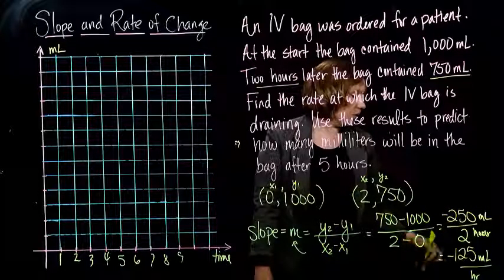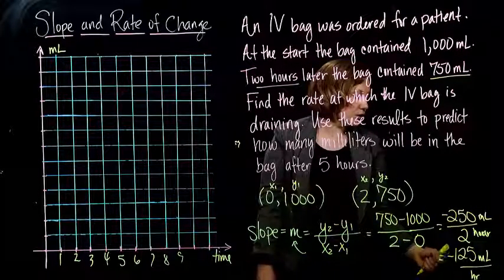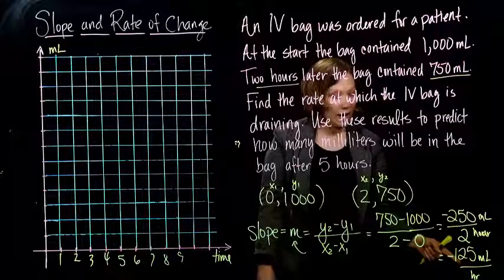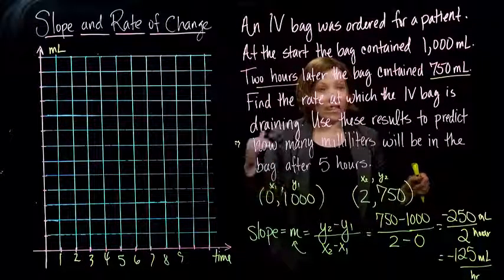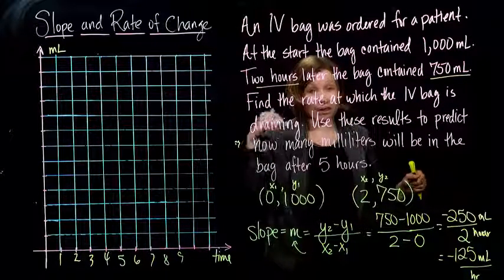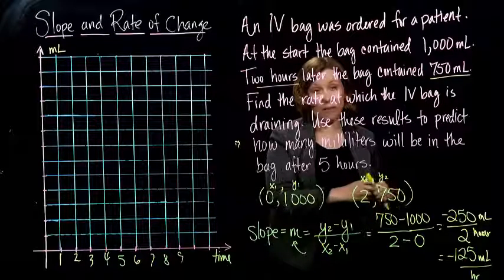So anyway, so we're at negative 125 milliliters per hour, which means for each hour, the bag is going to drain 125 milliliters.